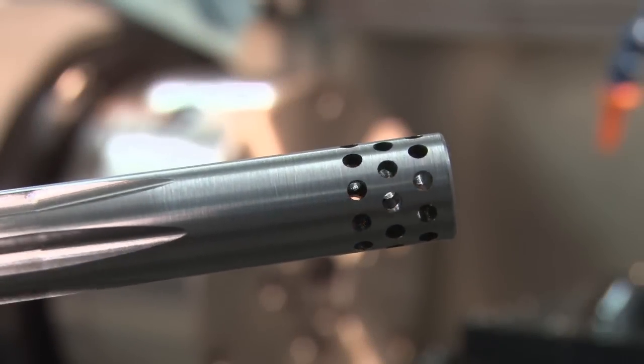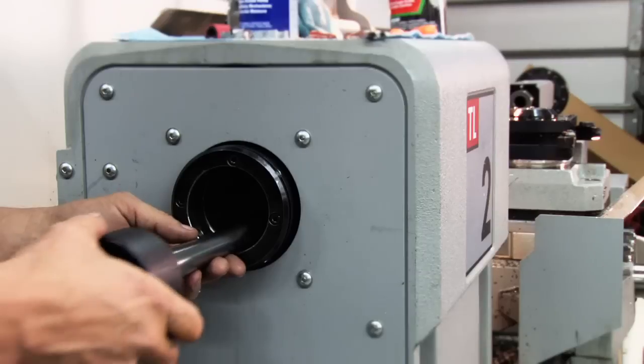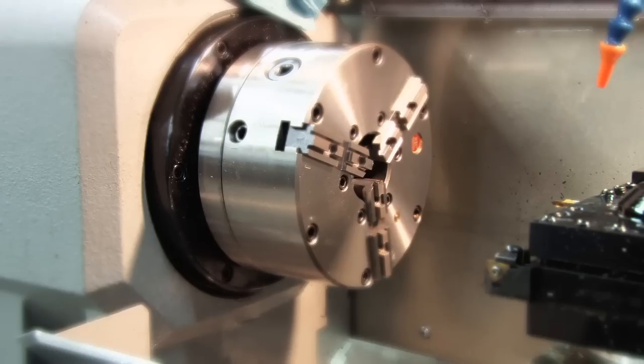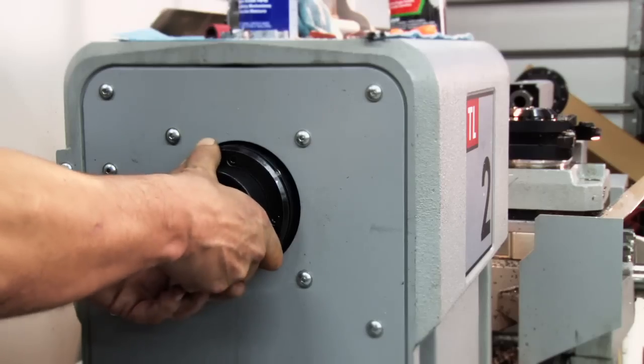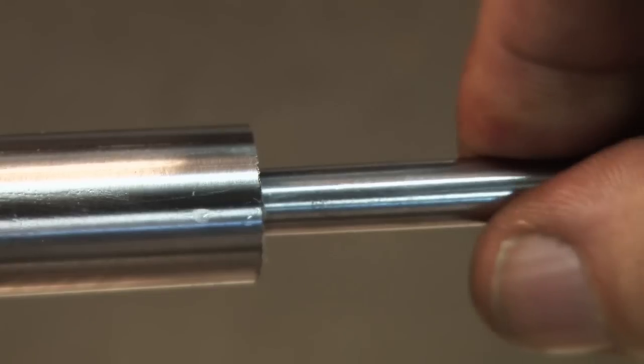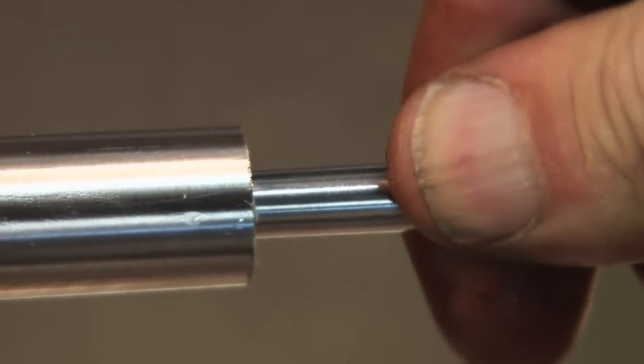A CNC machine combined with precise work holding fixtures allows tight tolerances when installing a muzzle brake. This will increase the accuracy and efficiency of the installation.